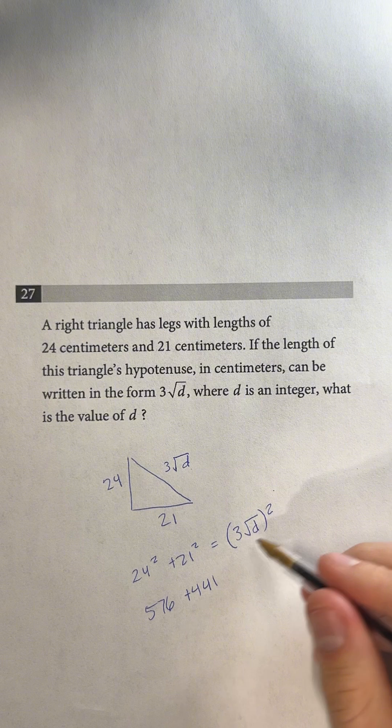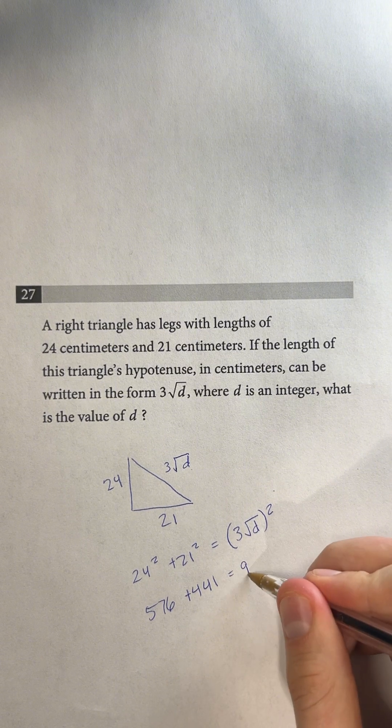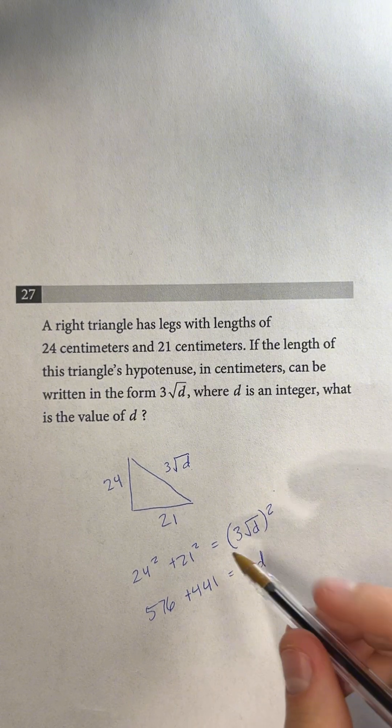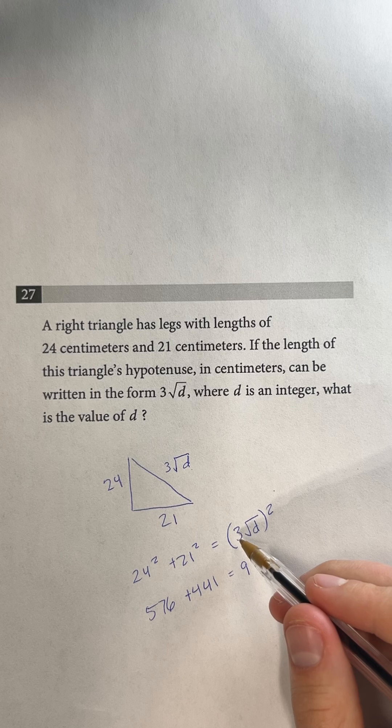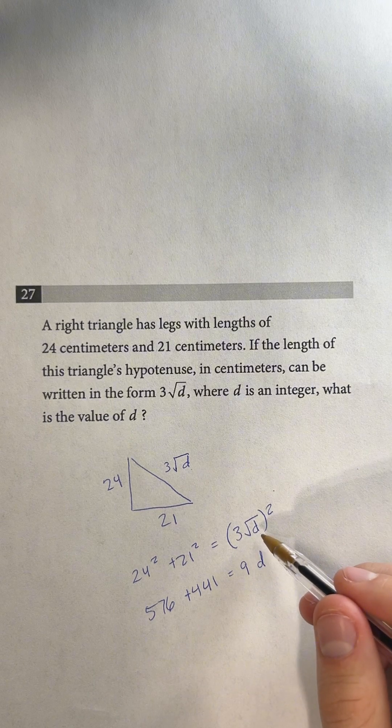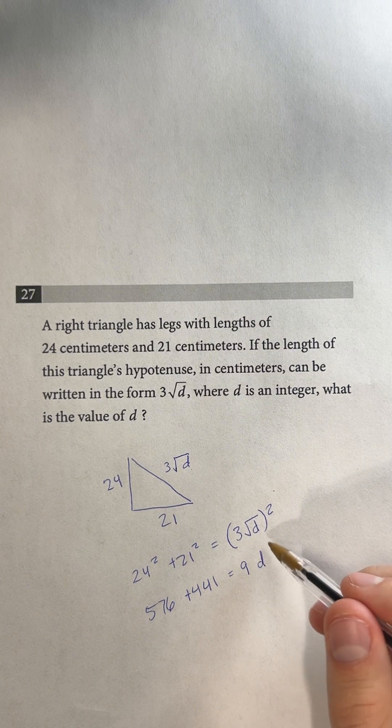And then when we square this whole thing, we're going to end up with 9d, because the 3 gets multiplied by itself. So we have 9. And then root d gets multiplied by itself. So root d times root d is just d.